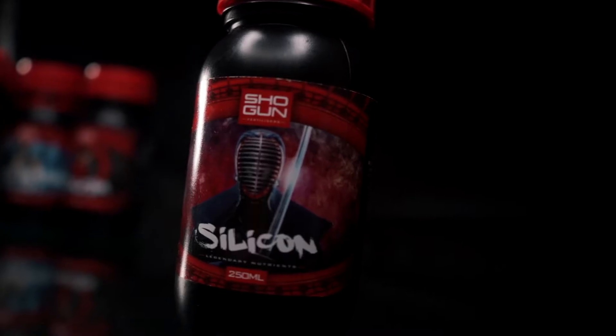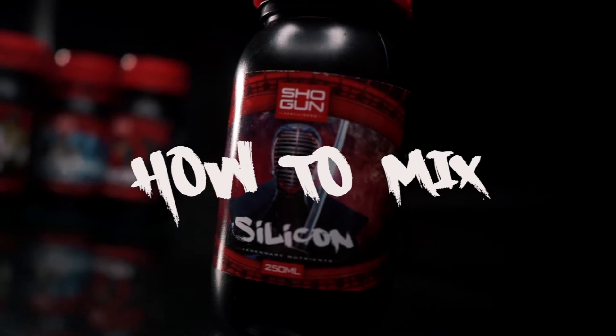What's up Shogun clan? Today we're going to be showing you how to mix Shogun silicon. Step 1: Add plain water.